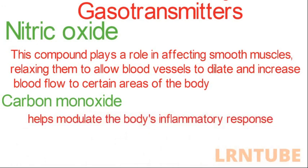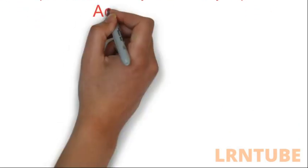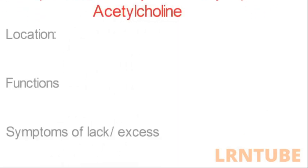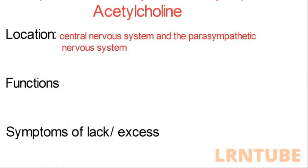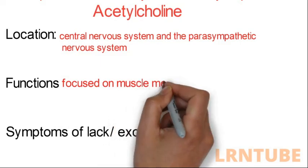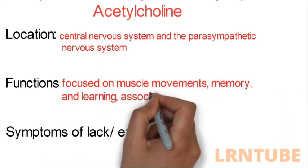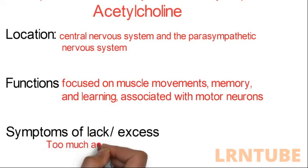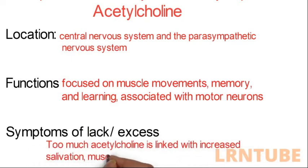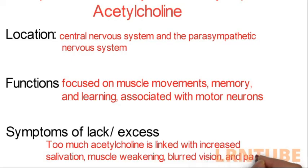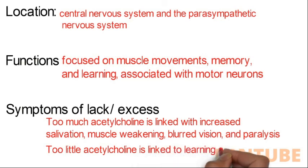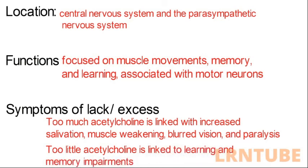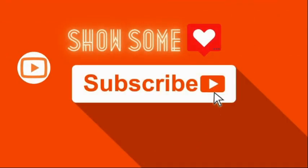Finally, acetylcholine is found in both the central nervous system and the parasympathetic nervous system. Its main functions are focused on muscle movements, memory, and learning, and it is associated with motor neurons. Too much acetylcholine is linked with increased salivation, muscle weakening, blurred vision, and paralysis. Too little is linked to learning and memory impairments. If you found this video helpful, support this channel by liking, sharing, and subscribing.